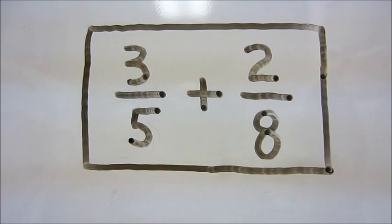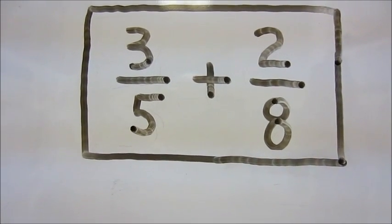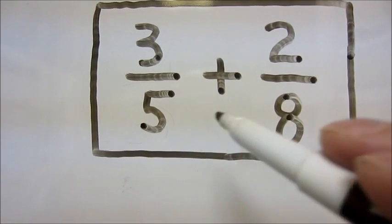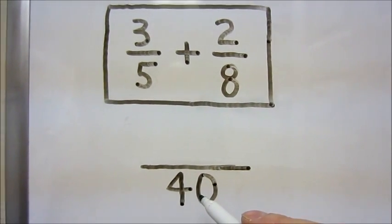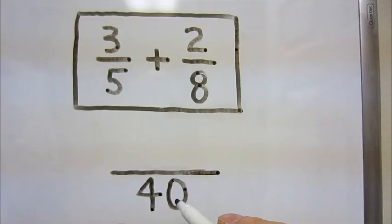To get this denominator, we multiply the two bottom denominators of each fraction, 5 and 8, to get 40. This will be the denominator we're going to be working with.